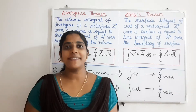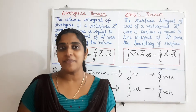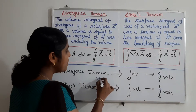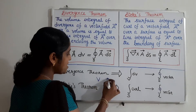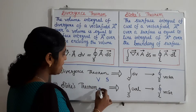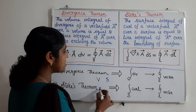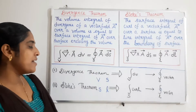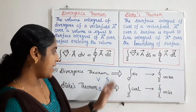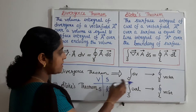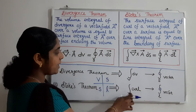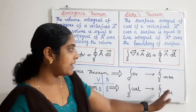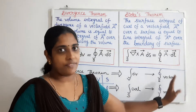The divergence theorem and Stokes theorem are very helpful in solving various physical problems. The divergence theorem gives the relationship between volume integral and surface integral, and Stokes theorem gives the relationship between surface integral and line integral. On the left hand side we have the operator — divergence in the divergence theorem and curl in Stokes theorem — and on the right hand side we have only that vector.